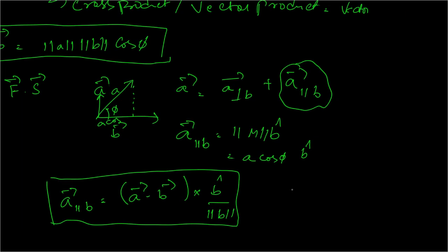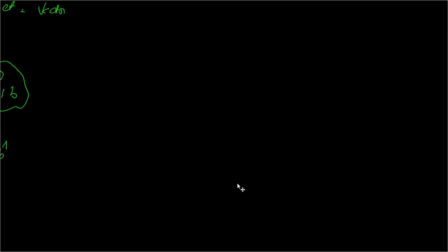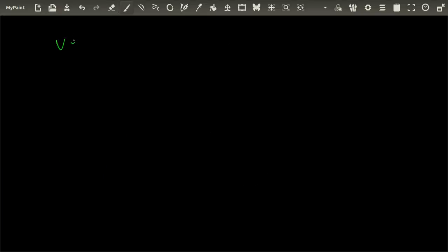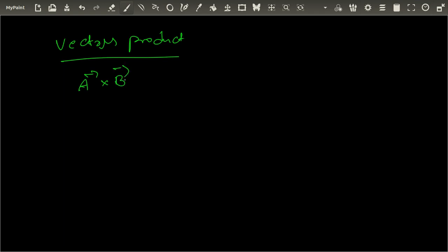Now that we've covered the dot product, let's talk about the cross product, also known as the vector product. It is denoted A-bar × B-bar and equals |A||B|sin(φ), where φ is the angle between A-bar and B-bar. The cross product is useful when discussing non-conservative forces, rotational momentum, fluid mechanics, and so on.